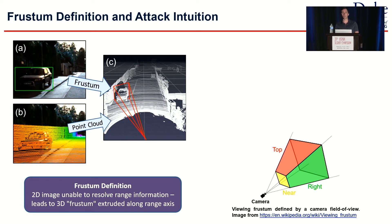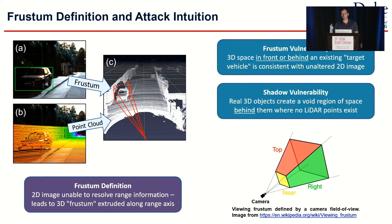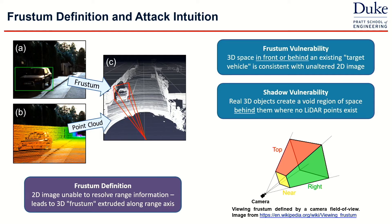Because of this inherent uncertainty in the range dimension, we hypothesize two potential vulnerabilities of camera-LiDAR fusion. The first is the frustum vulnerability: the 3D space in front of or behind an existing target vehicle is consistent, so if you move a car within that frustum, when you project the information back to the 2D plane, it's still consistent with the 2D information even though the range has changed. The second vulnerability is that in 3D, an object creates a shadow region in the LiDAR point cloud. Our frustum attack leverages both of these potential vulnerabilities.